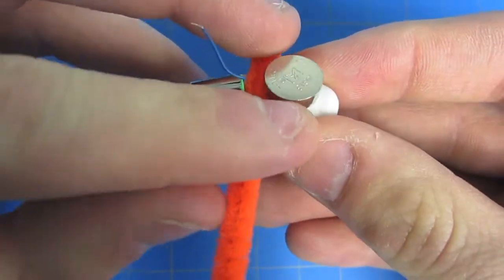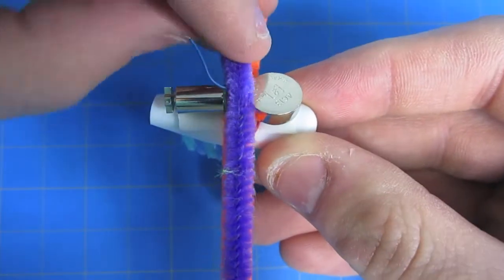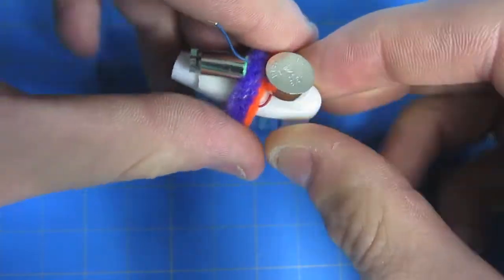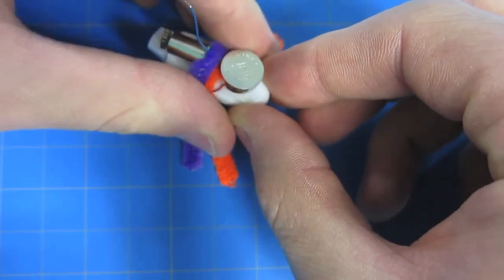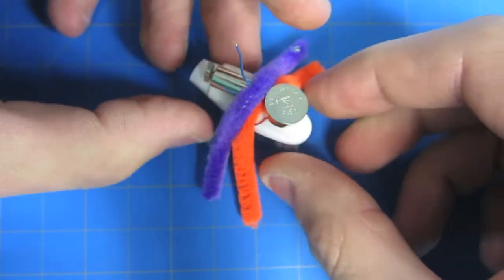Use the pipe cleaners as a sort of training wheels for your Bristlebot to make sure that it can stay upright and won't fall over. We give you two; choose how many you want to use or choose other materials to help your Bristlebot stay upright.